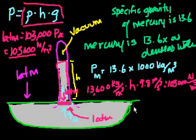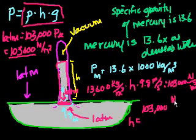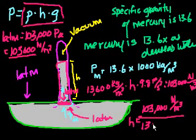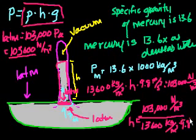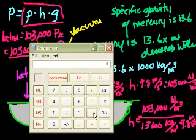So let's see. If we divide both sides, we could just do all of the math. So if we divide both sides by 13,600 times 9.8, we get the height is equal to 103,000 Newtons per meter cubed over 13,600 kilograms per meter cubed times 9.8 meters per second squared. And what does that get us to? And notice, make sure you always have the units right. That's the hardest thing about these problems, just to know that an atmosphere is 103,000 Pascals, which is also the same as Newtons per meter squared.